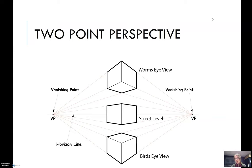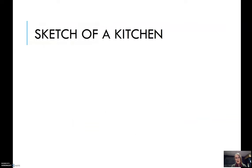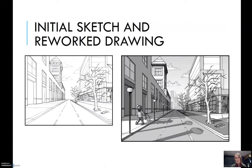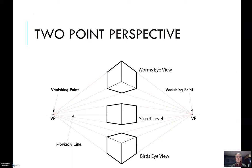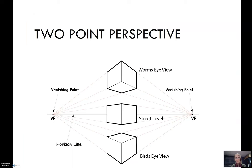We just got finished talking about one-point linear perspective, which we have in this first diagram, where you have one vanishing point on the horizon line. Now we will talk about two-point perspective, and in two-point perspective, the only difference is instead of having one vanishing point, you have two.